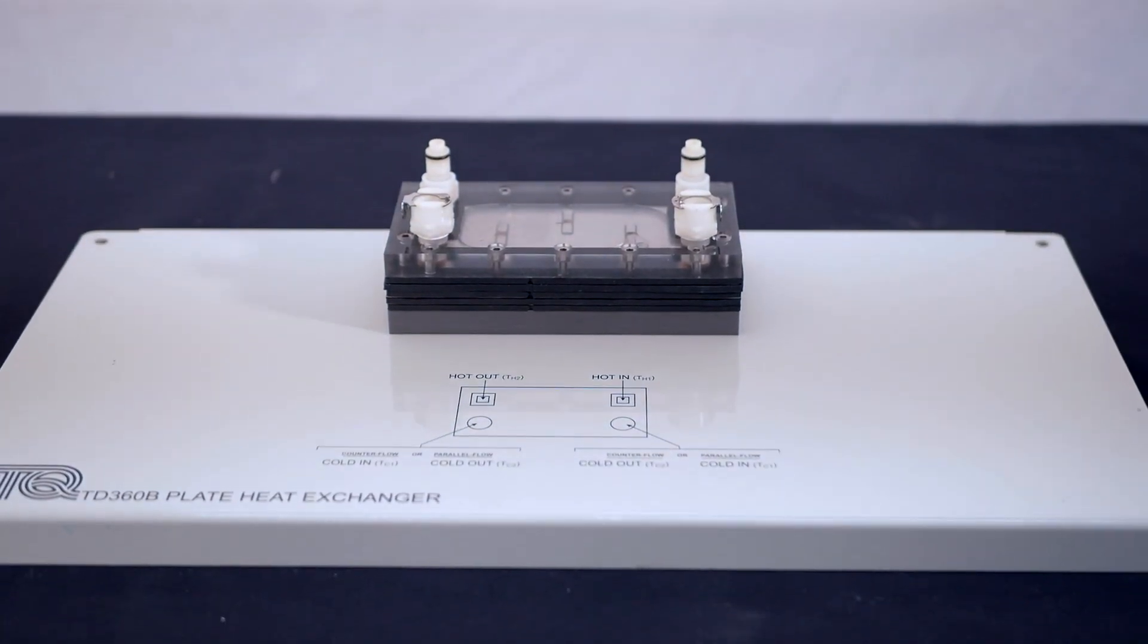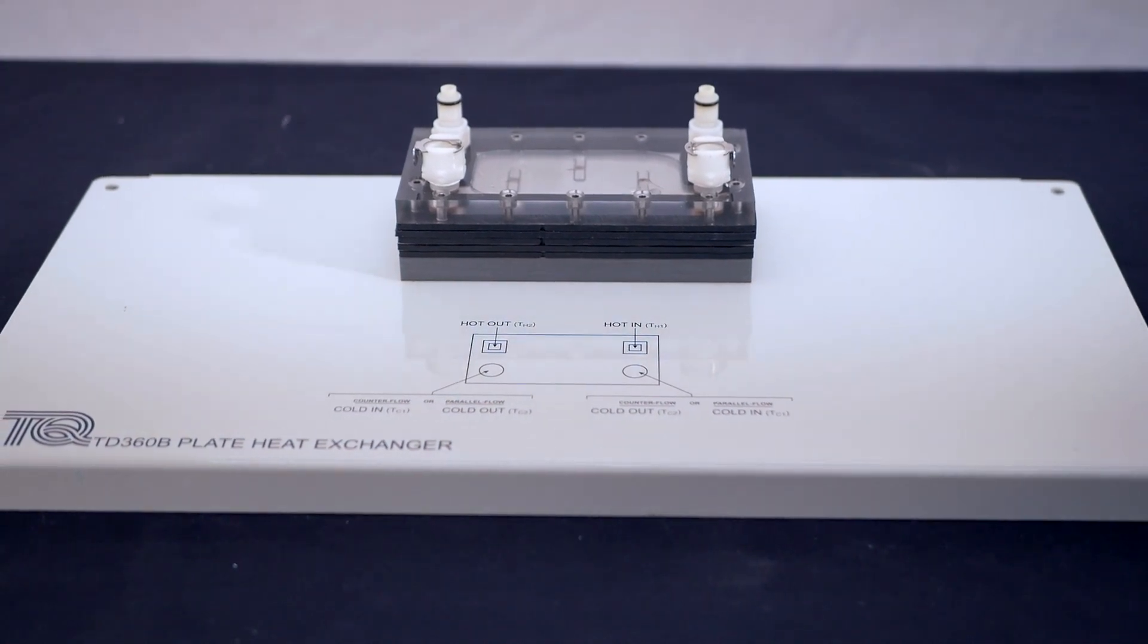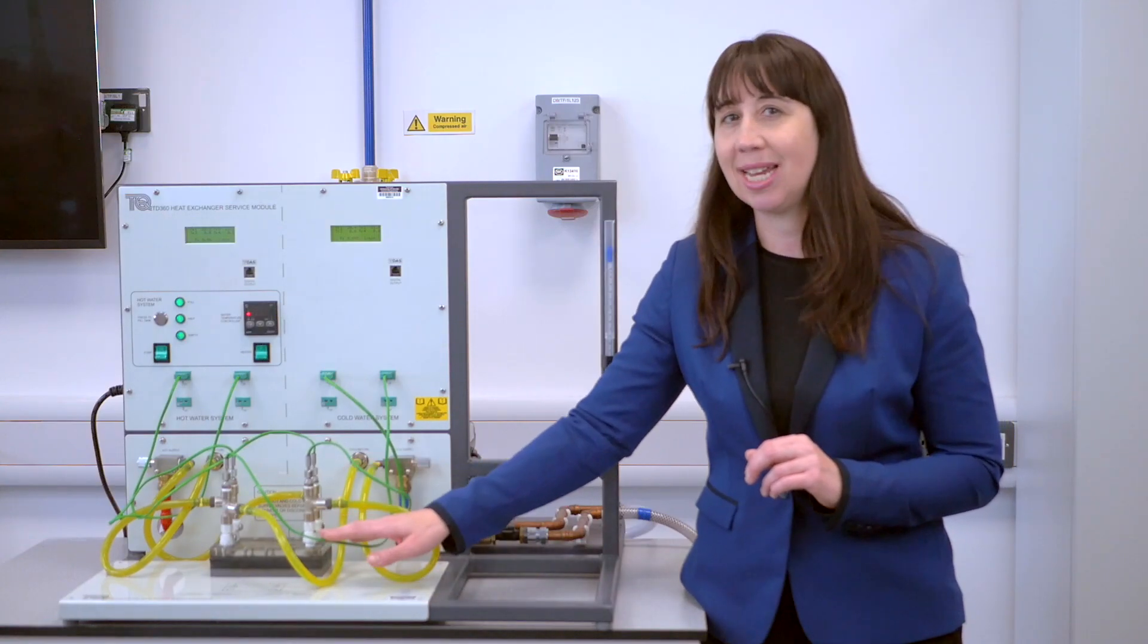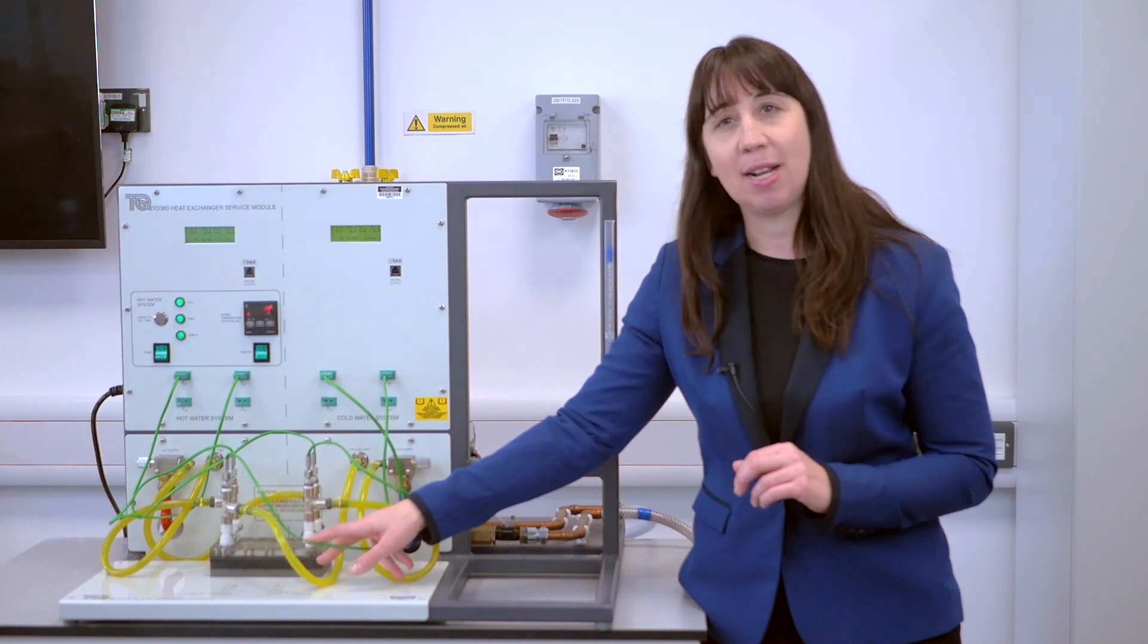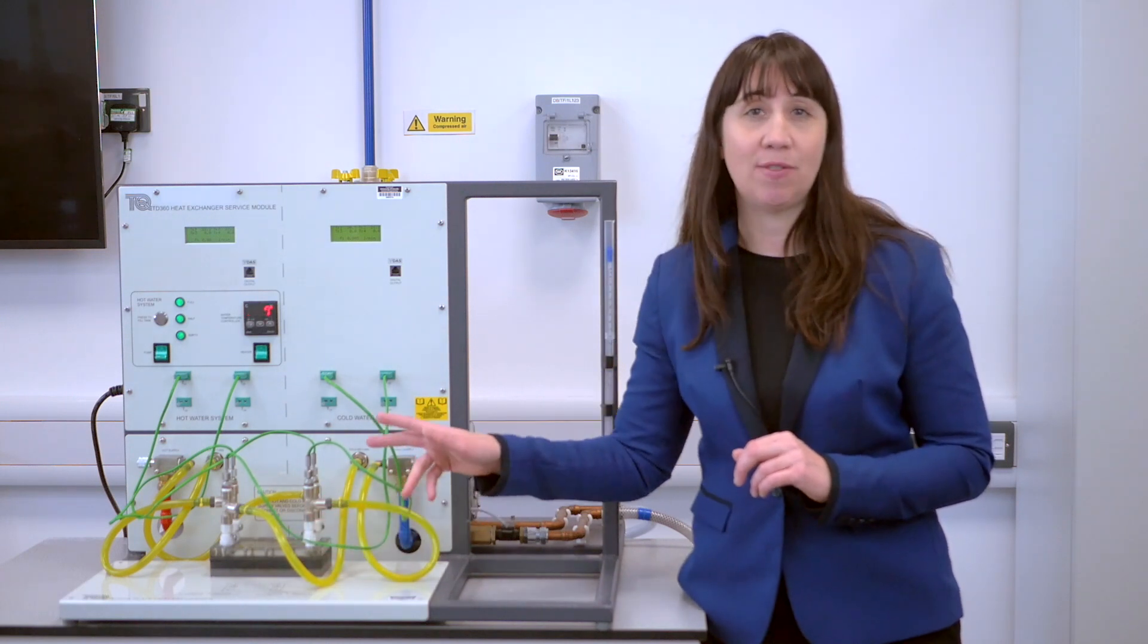The plate heat exchanger, the TD360B, is made up from alternating hot and cold layers separated by a metallic plate acting as a heat transfer surface.